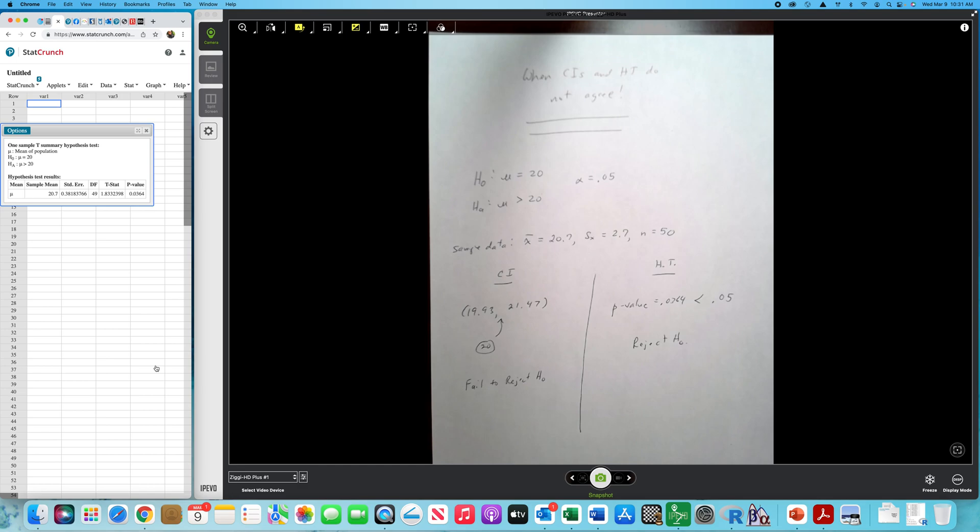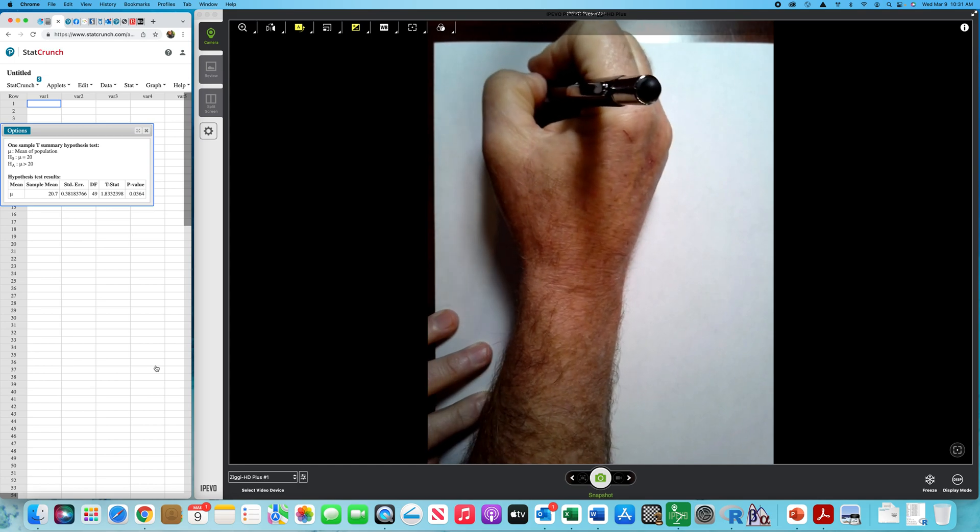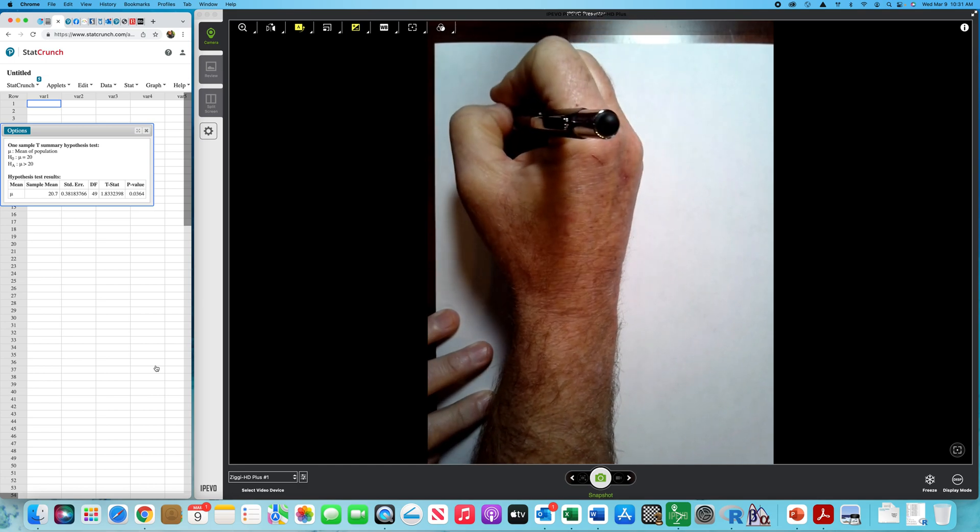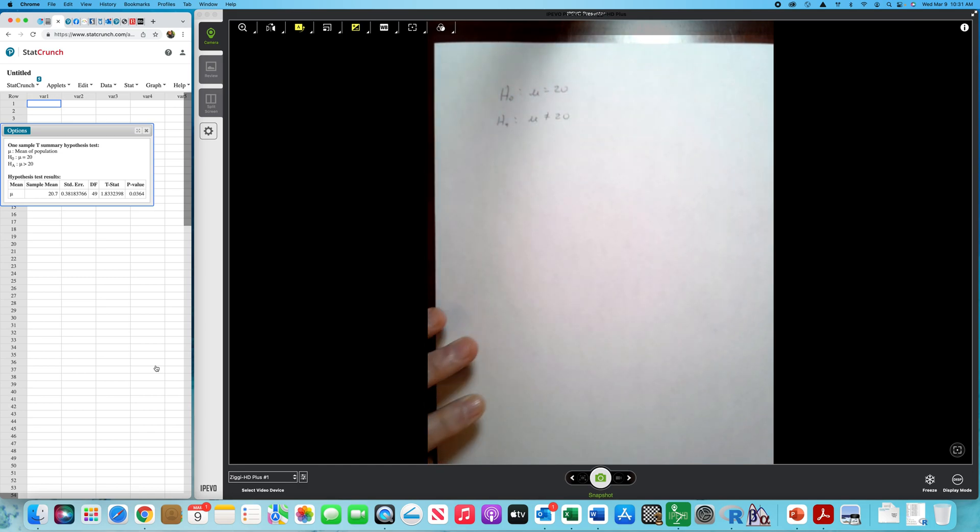Now, again, how can you make sure that this never happens? Well, just always test not equal to. Let me show you how that plays out. Now, if we test not equal to and let's say that we end up rejecting.